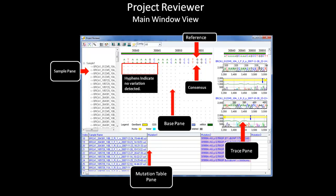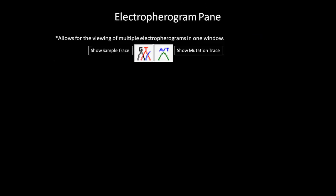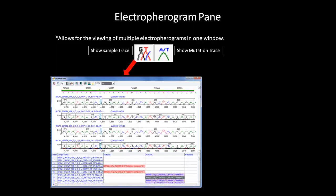You may also edit your mutation in this table, as discussed previously. In the electropherogram pane, with the icon shown here in the toolbar, you can select to show sample traces, show mutation traces, or show both. In the first example, only the show sample trace is selected. As you can see here, four sample traces are displayed at once. The variation is highlighted to show the position of the variant.